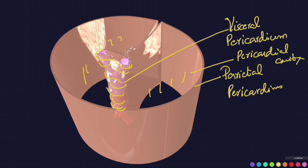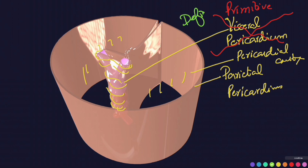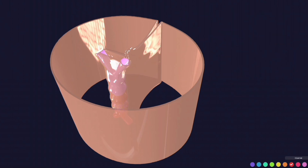But here the story is different. This layer I am calling visceral pericardium is not actually the visceral pericardium. We can call it the primitive visceral pericardium, but it is not the definitive pericardium. The definitive pericardium is formed through another process entirely.